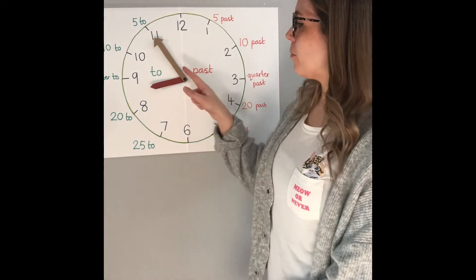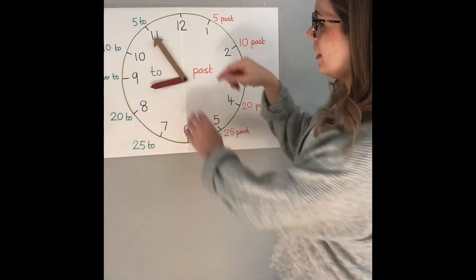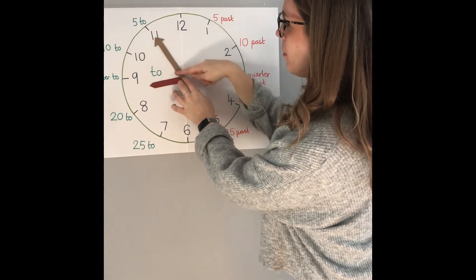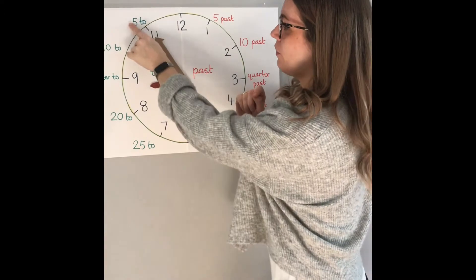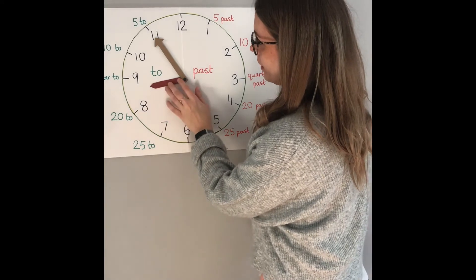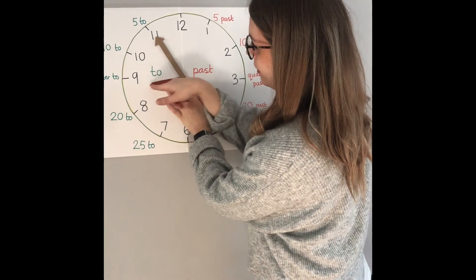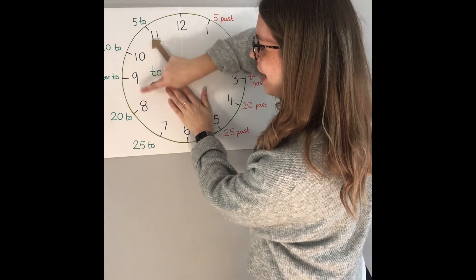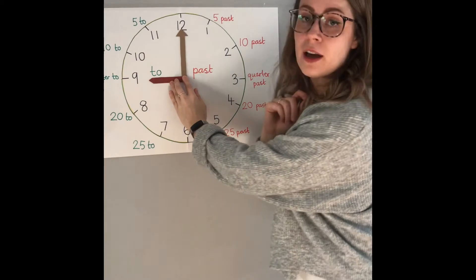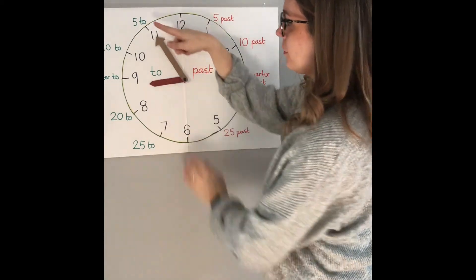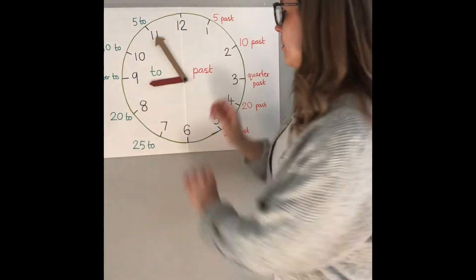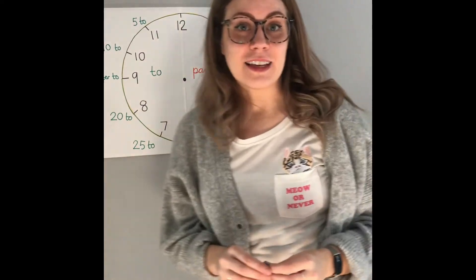I'd start off by looking at the minute hand. The minute hand is pointing to eleven, which says five to. So it's five minutes to. And then if we have a look at the hour hand, it's in the middle of eight and nine. The next hour at o'clock will be nine o'clock. So it's five minutes to nine.